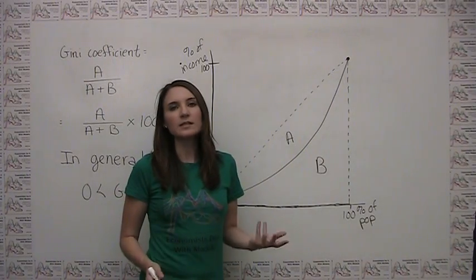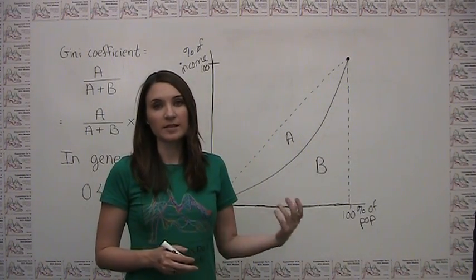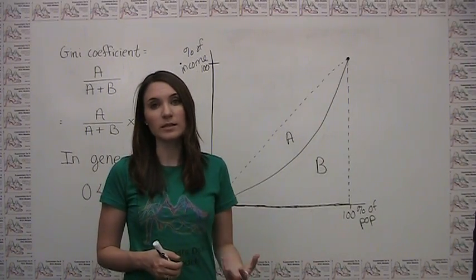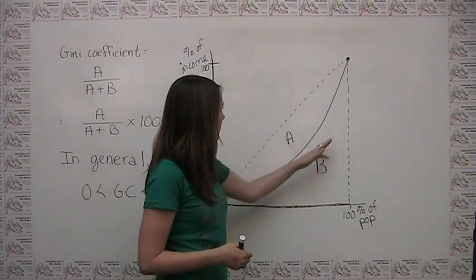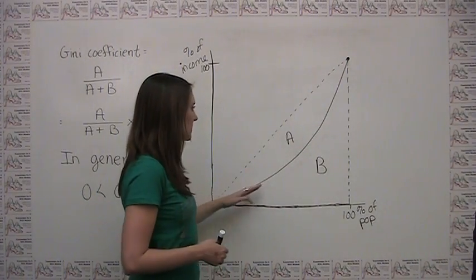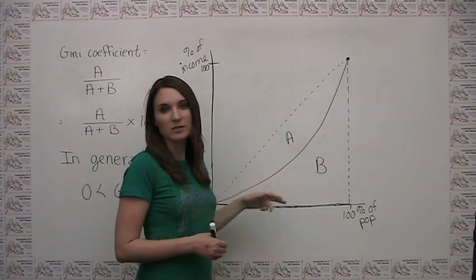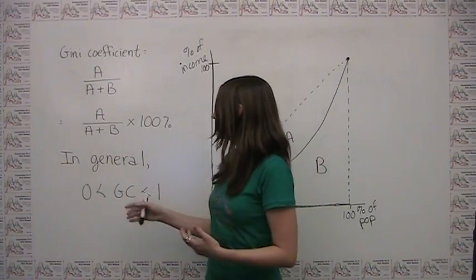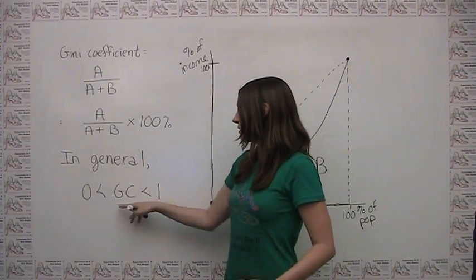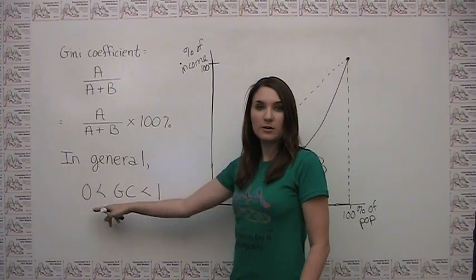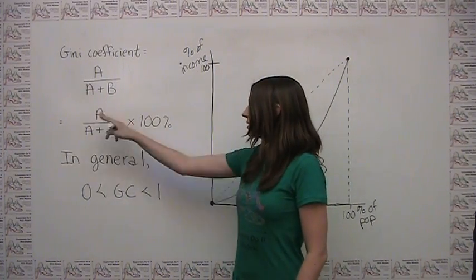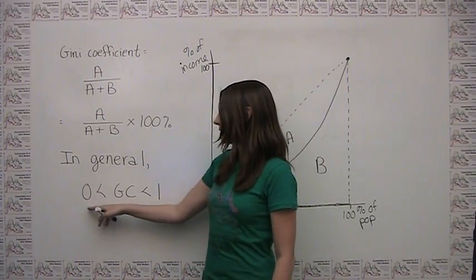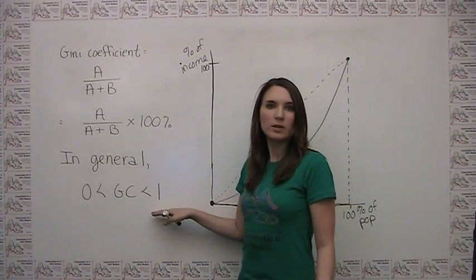In reality, societies experience neither perfect income equality nor perfect income inequality, so we end up with Lorenz curves that have a typical bow-down shape. The implication is that in practice, Gini coefficients are strictly between 0 and 1, or if expressed as indexes or percentages, strictly between 0 and 100%.